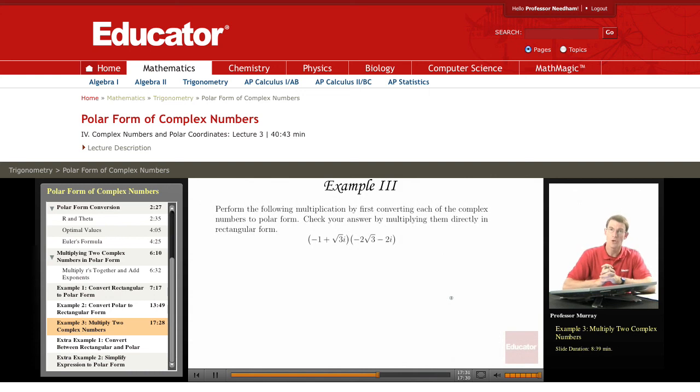For the third example we're going to use polar form in an application. We're going to perform a multiplication by converting each of the complex numbers to polar form, and then we're going to check the answer by multiplying them directly in rectangular form.